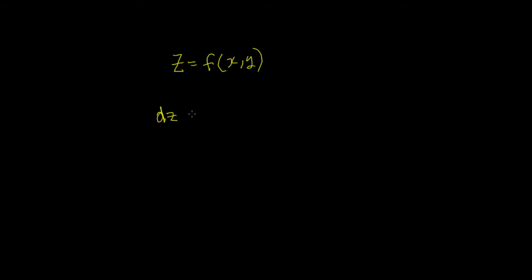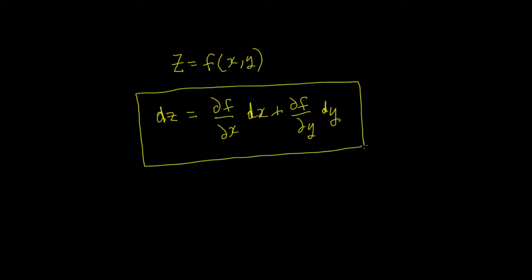DZ equals partial F by partial X times DX plus partial F by partial Y times DY. Now, I derived that and I showed a little thought experiment so you could picture exactly what each of these terms were.